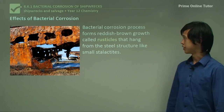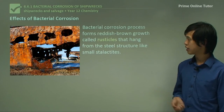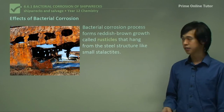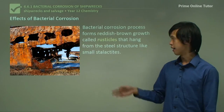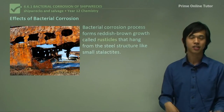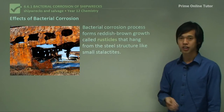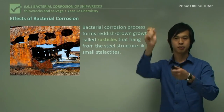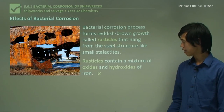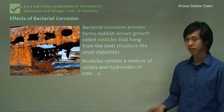The effects of bacterial corrosion: bacterial corrosion forms reddish-brown growths — you can see them in this picture here — and we call them rusticles. It's a portmanteau of rust and icicle, so they kind of look like rusty icicles. They hang from steel structures like small stalactites, like the ones you see in caves such as Jenolan Caves. These rusticles essentially contain a mixture of oxides and hydroxides of iron.